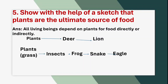Fifth question: Show with the help of a sketch that plants are the ultimate source of food. Answer: All living beings depend on plants for food directly or indirectly. Example — Plants → Deer → Lion. That means deer eat plants and deer will be eaten by lion. Another chain: Grass → Insects → Frog → Snake → Eagle. That means plants are eaten by insects, frog eats insects, snake eats frog, and eagle eats snake.